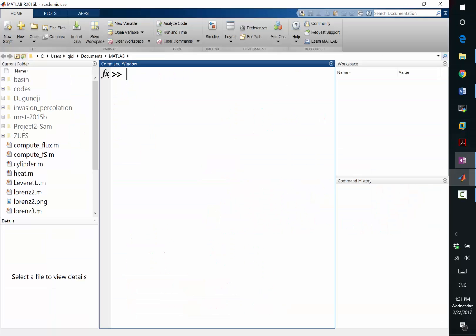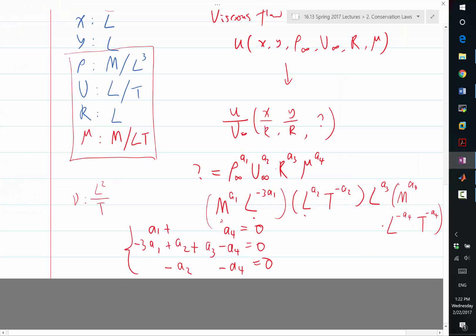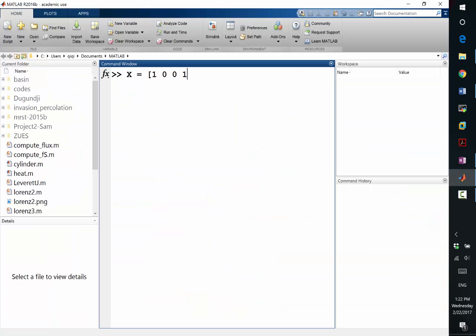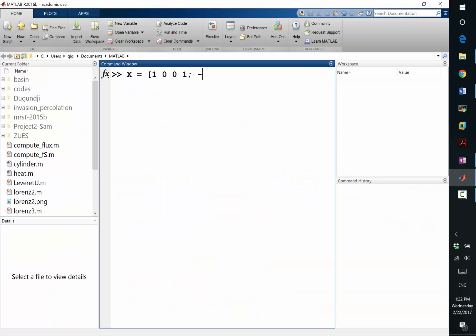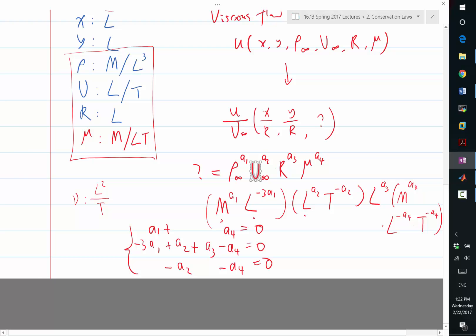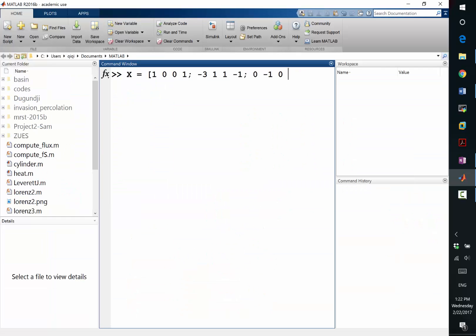All right, so let me demonstrate how to do that in MATLAB. So I'm going to make the matrix A, X, to be corresponding to that matrix. So the first row corresponds to the first equation, and what is the first row? 1, 0, 0, 1. Second row? Minus 3, 1, 1, minus 1. Third row? 0, minus 1, 0, minus 1. Good, 0, minus 1, 0, minus 1. All right, so I get a matrix like that.